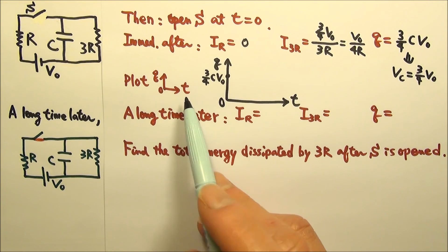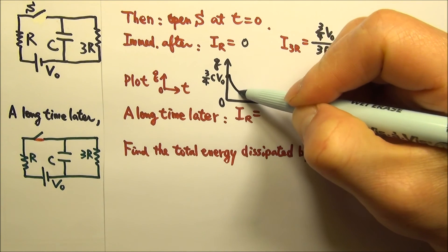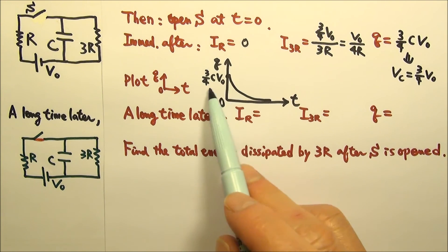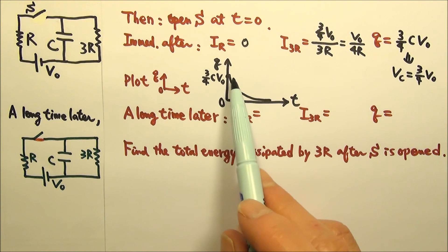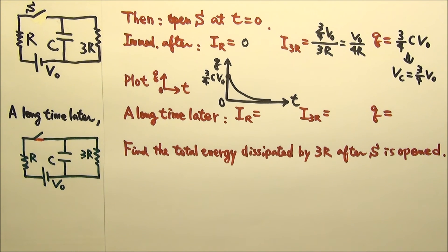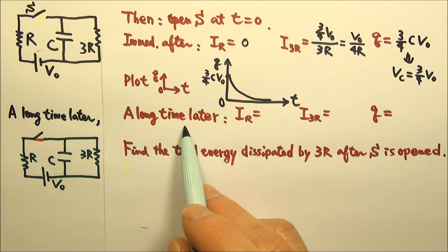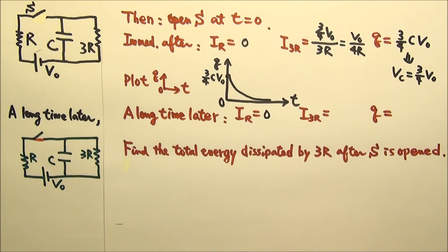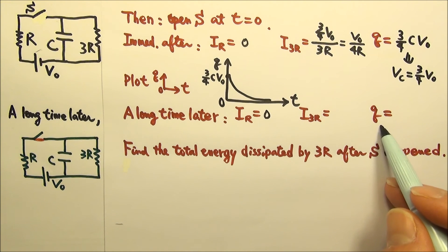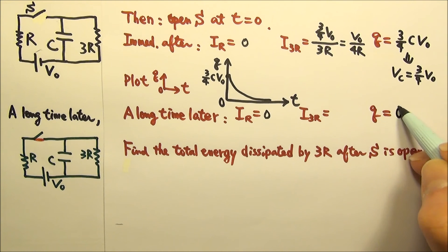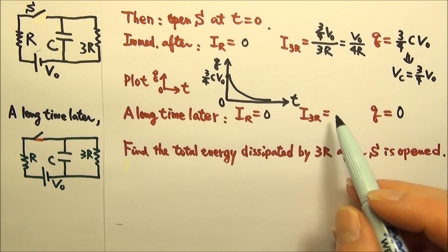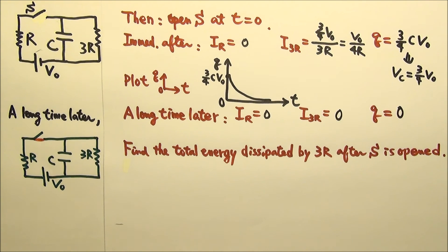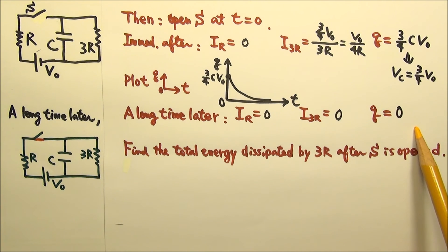For the charge as a function of time, we have an exponential decay from the initial charge 3/4 × C × V₀ down to zero. A long time after the switch is opened, 1R still has no current, and the capacitor will be completely discharged, so Q = 0 and there is no more discharging current. Without the battery supplying energy, the capacitor runs out of charge and energy, so there is no more electric activity.